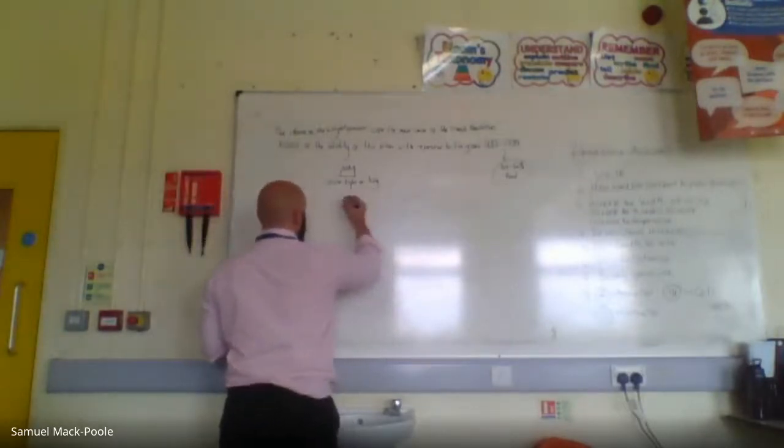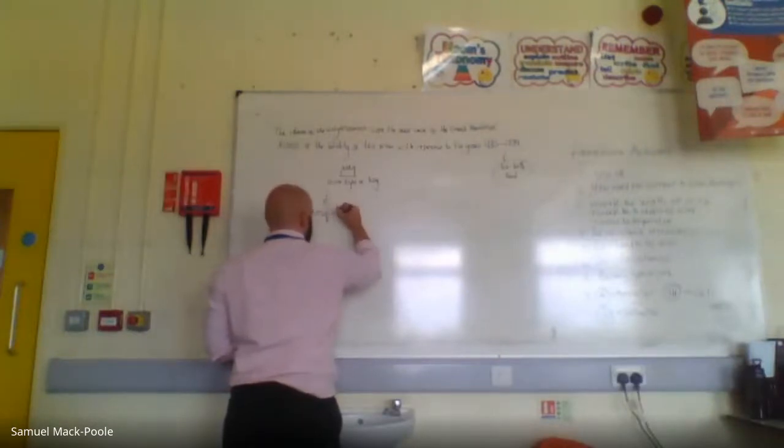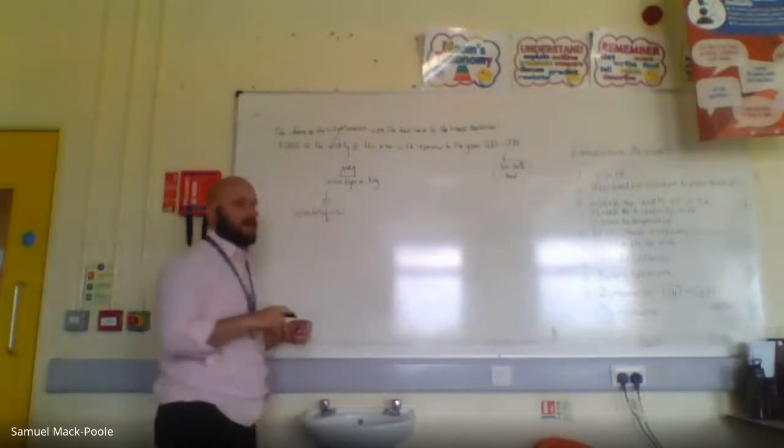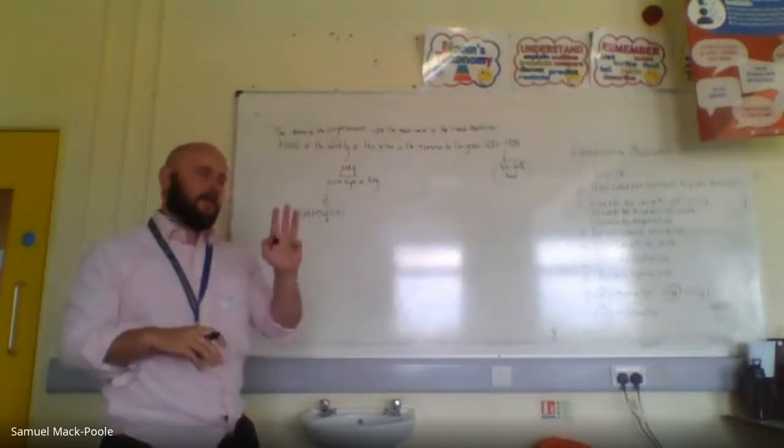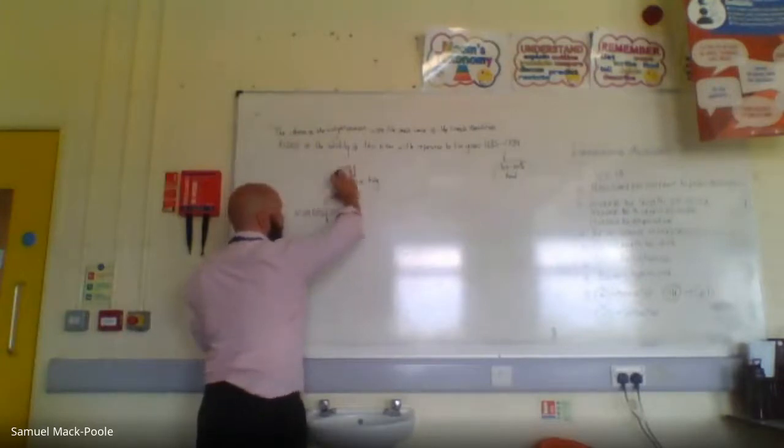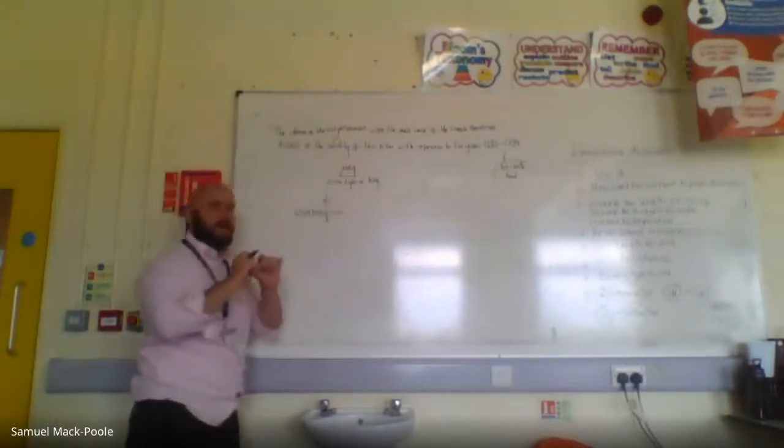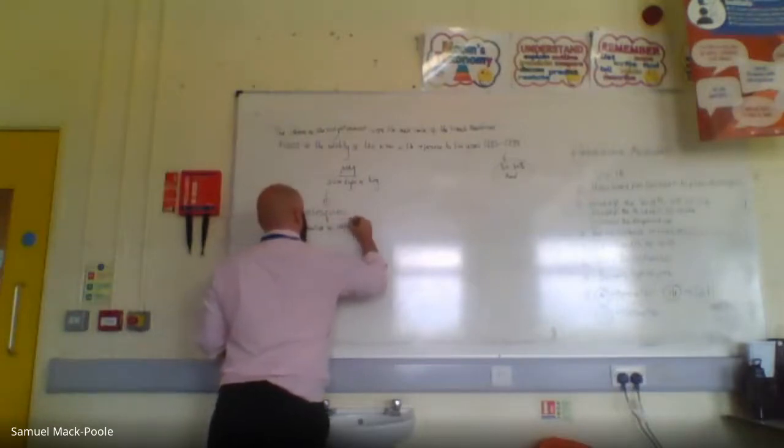Now basically what you get is this divine right of king, and basically absolute power of monarchs. You get these challenges, and one of the great challenges is Montesquieu. There's a lot of Enlightenment thinkers, a lot of them, but you only need to write about three in this. So Montesquieu basically came up with this idea that rather than a king having all the power, the power should be separated. So he comes up with this idea of separation of powers.